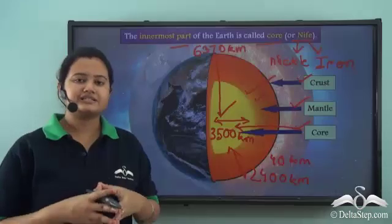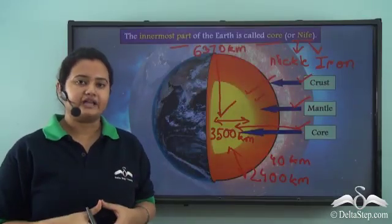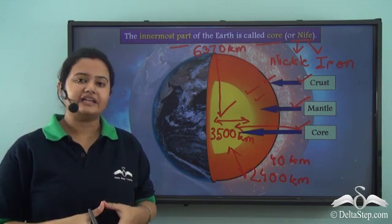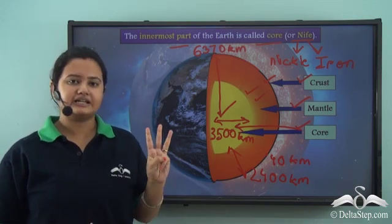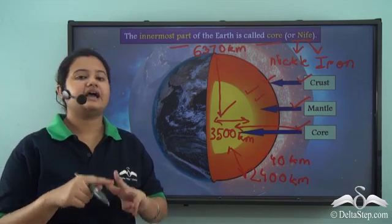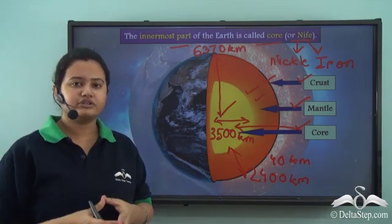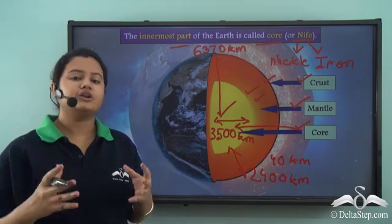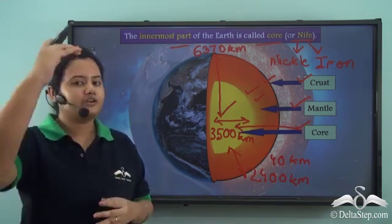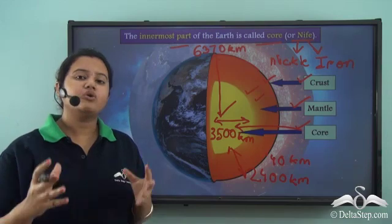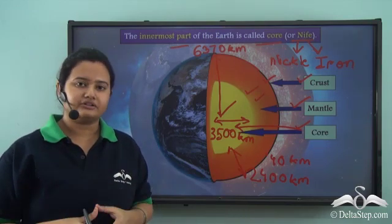In today's lesson we discussed the interior structure of the Earth, finding that it is composed of three distinct layers: crust, mantle, and core. The crust is the outermost part, the mantle is the middle layer sandwiched between crust and core, and the core is the innermost or central part of the Earth.